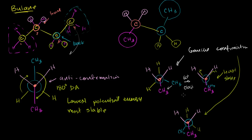Hopefully you understand now that you just need to pick two carbons, and if there are large groups attached to each of those carbons, you can represent them as substituent groups. When you do that, you can use a Newman projection for any part of a molecule, and start thinking about how it can rotate and which conformations will be more or less stable.